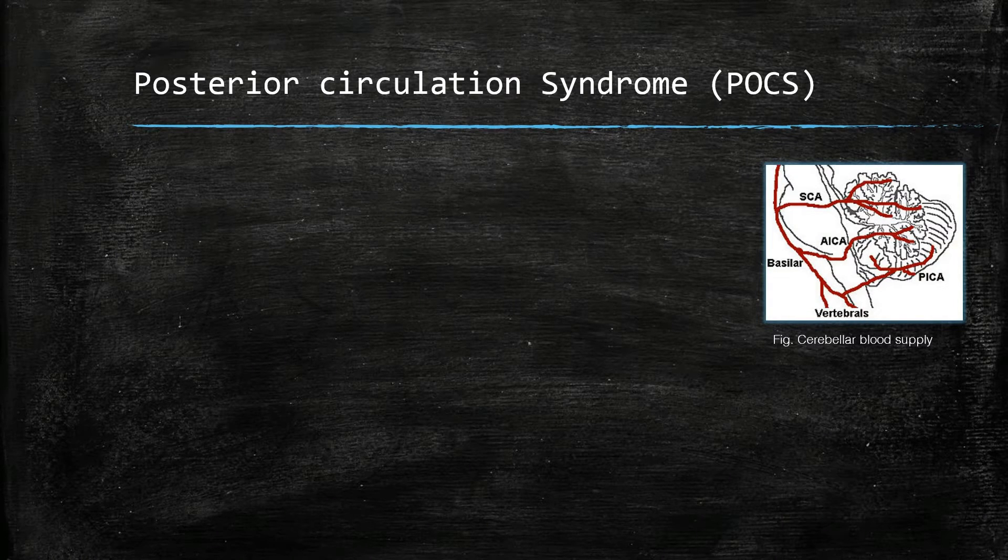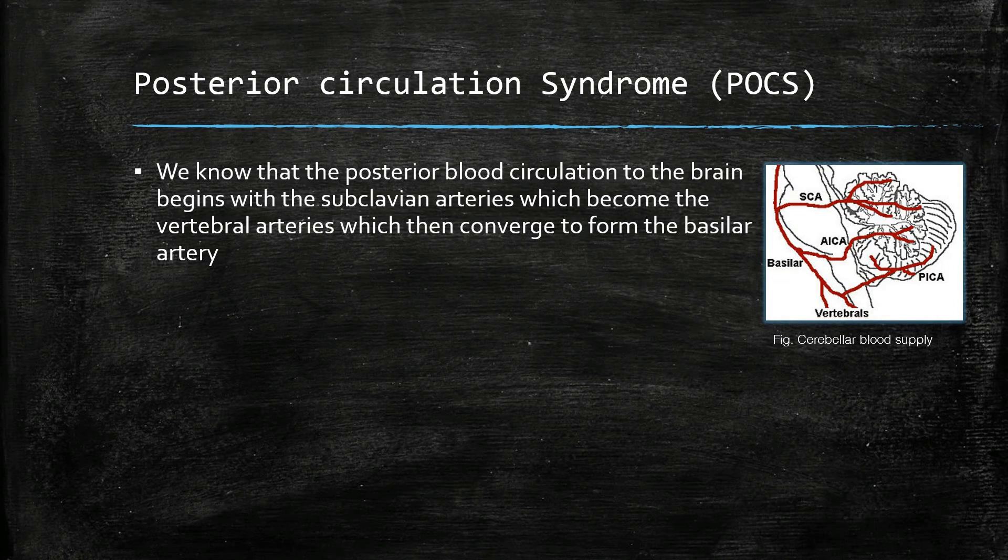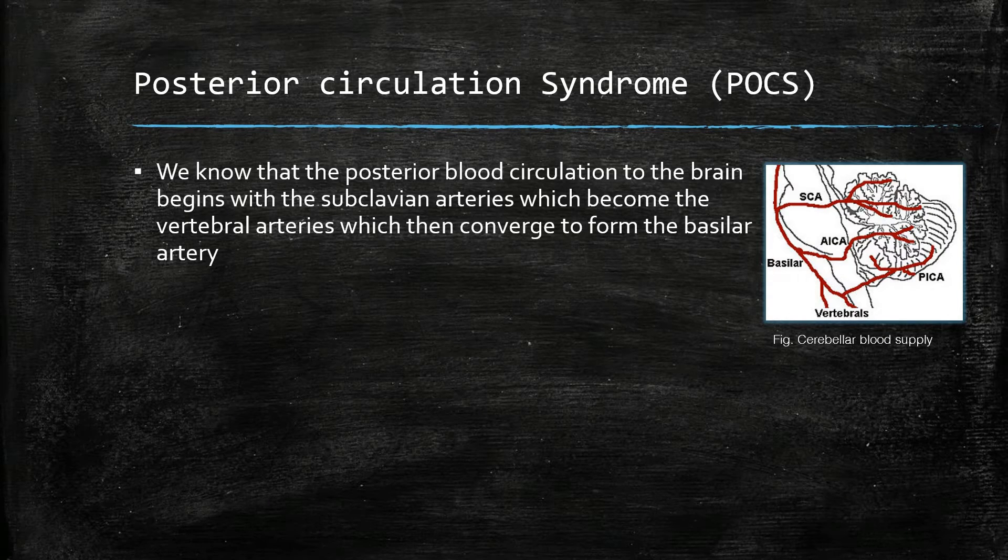Posterior circulation syndrome. We know that the posterior blood circulation to the brain begins with the subclavian arteries, which then become the vertebral arteries, which then converge to form the basilar artery.